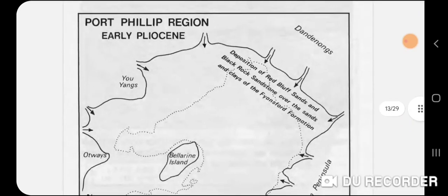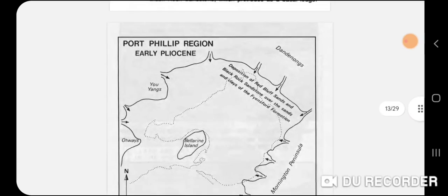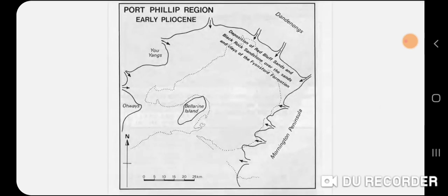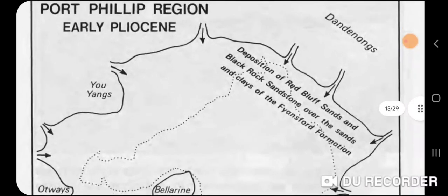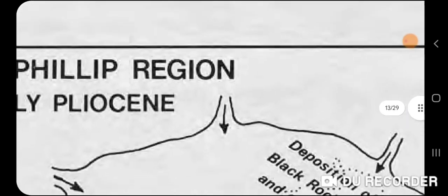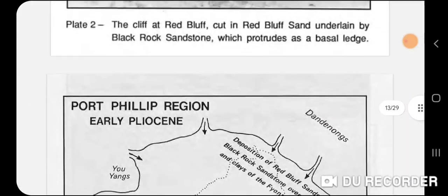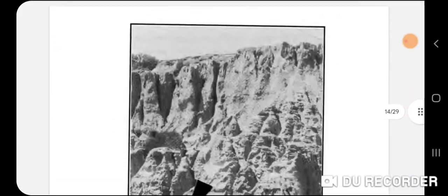Here's the Port Phillip region in the early Pleistocene — the time period when the Red Bluff was actually being deposited. It shows deposition of Red Bluff sands and Black Rock Sandstone over the sands and clays of the Phillains Bird Formation. The arrows pointing inward would have been the major river courses — they probably correspond to current rivers. You've got Bellarine Island and Bellarine Peninsula, and where we were is pretty much in that deposition area.